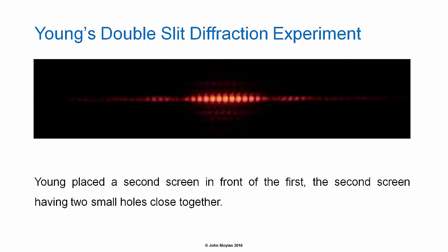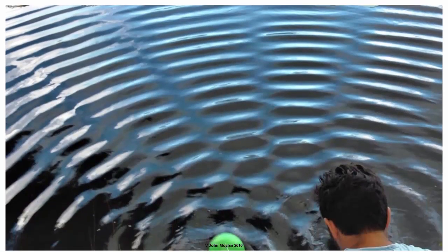When Young placed a second screen in front of the first, the second screen having two small holes close together, he produced a pattern similar to the one above, in which the central bright spot and subsidiary bright spots are still present, but they are divided into a number of maxima and minima.